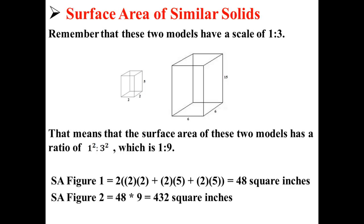The surface area of figure 2 is equal to simply 48 times 9, or 432 square inches. That is because the surface area of figure 2 is 9 times that of the surface area of figure 1.